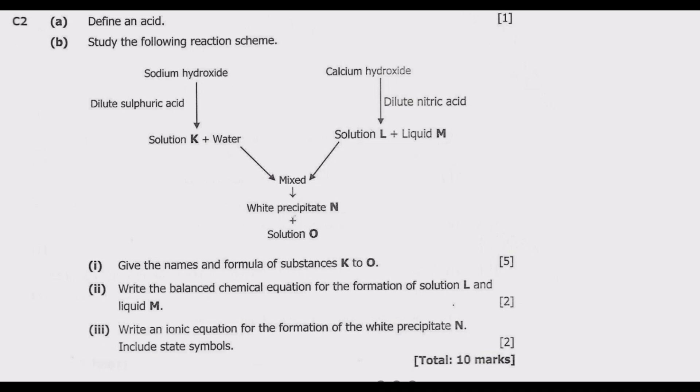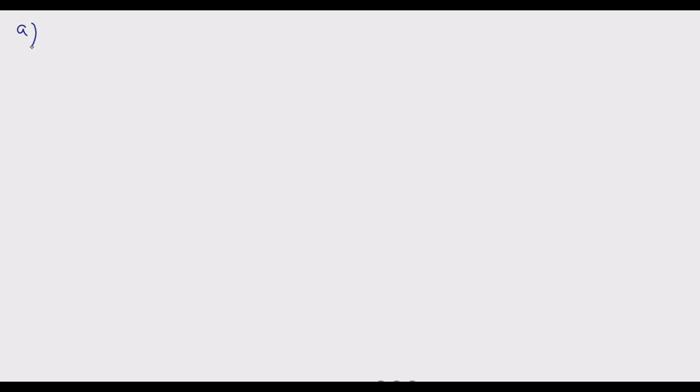Question C2A: define an acid. So in this case we are just required to state what an acid is. When you're talking about an acid generally, you are talking about a hydrogen-containing substance that is capable of donating a hydrogen ion to another substance. In other words, it is any substance that ionizes when it dissolves in water to give a hydrogen ion — that is what is known as an acid.